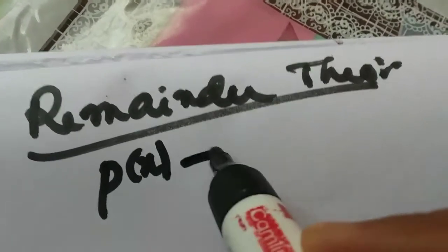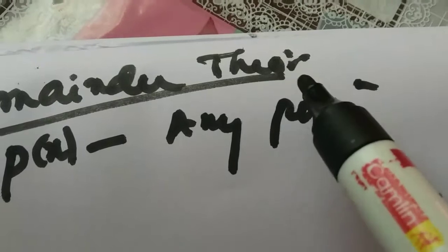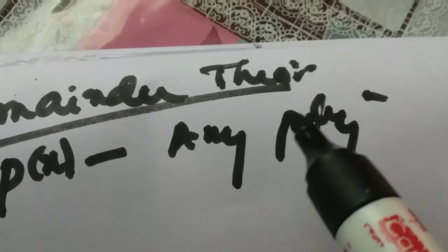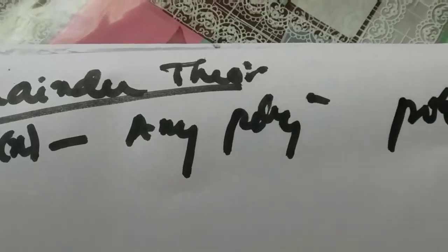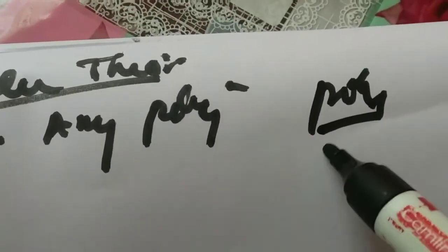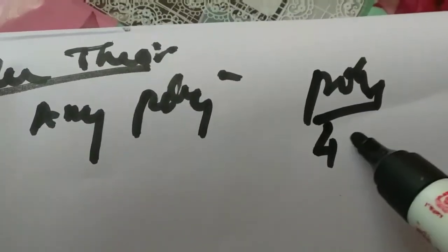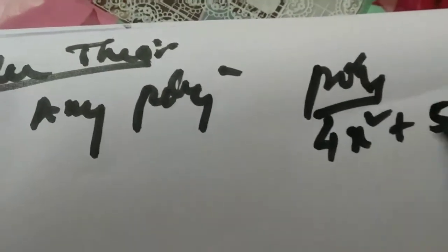It says that if P of X is any polynomial — we don't know, maybe it's of linear or quadratic degree — any polynomial. You know what a polynomial is: it is an algebraic expression where the powers of the variables will be non-negative integers.